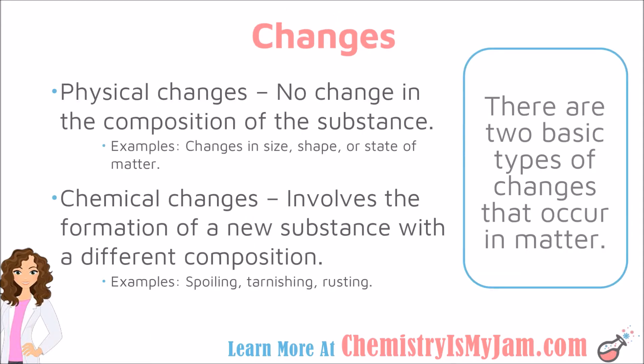Now that we have seen physical and chemical properties, let's take a look at physical and chemical changes. A physical change indicates that there is no change in the composition of the substance — you can change the size, the shape, or the state of matter, but the composition of the particles you started with is the same as the composition of the particles you end up with. A chemical change involves the formation of a new substance with a different composition, like spoiling, tarnishing, or rusting.